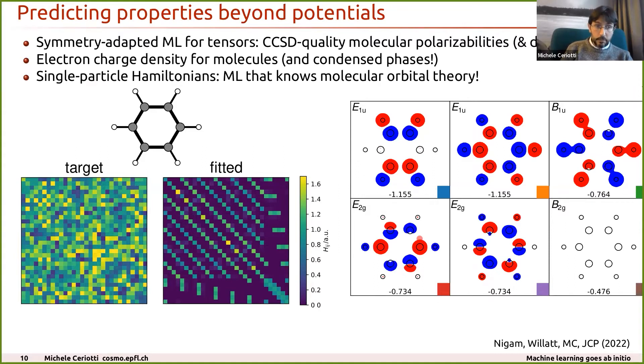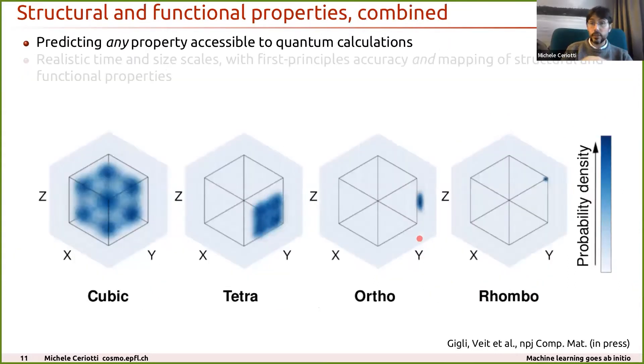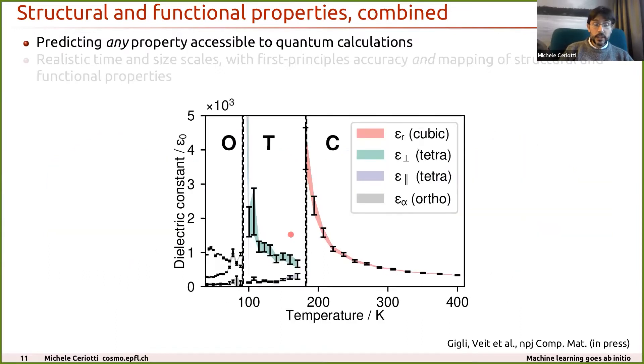For benzene, that has D6H point group symmetry - if you try to learn a target Hamiltonian that is noisy, the machine learning model only learns the part that is symmetric, and automatically it gives you molecular orbitals that have the correct symmetries based on the character table of D6H. Given that you can predict potential and properties, you can also put these things together and simulate materials at finite temperature. For instance, study the ferroelectric phase transition that occur in barium titanate, which is one of the paradigmatic ferroelectrics. You can predict not only the thermodynamics of the phase transitions, but also what happens in terms of the dielectric properties of this material.